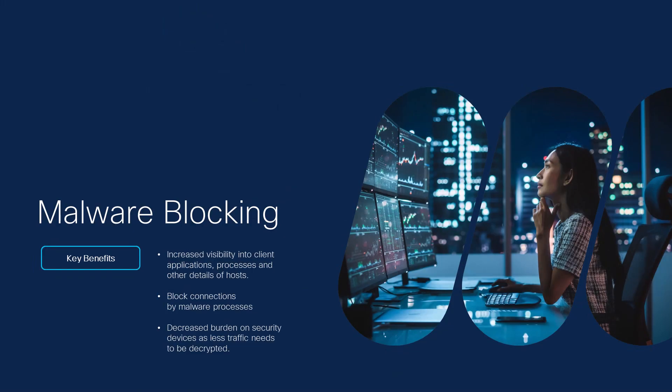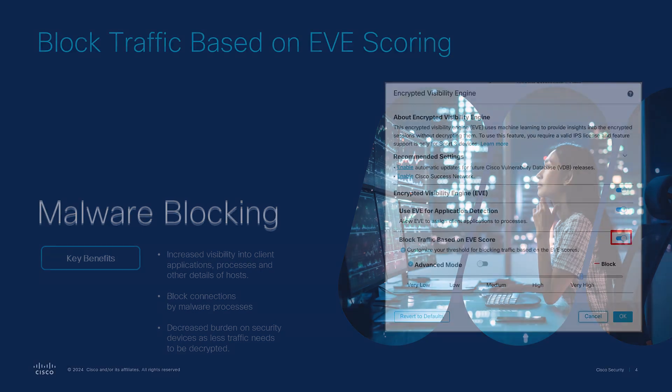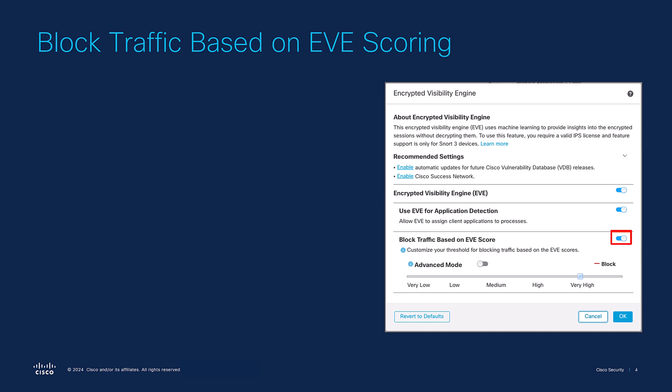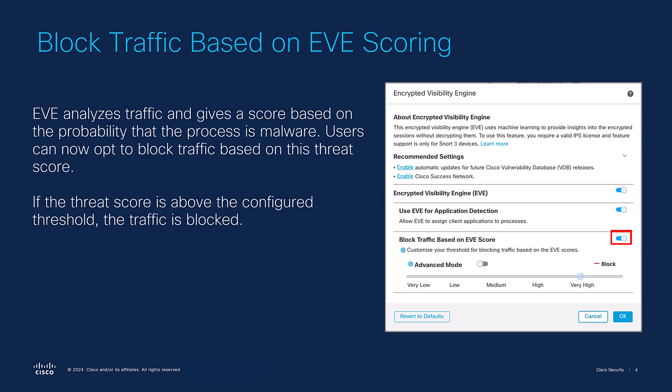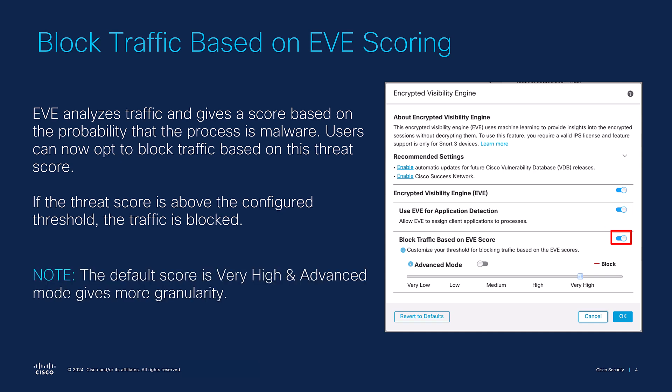Getting us started, we have malware blocking in TLS encrypted sessions, which has four main enhancements. The first is the ability to block traffic based on EVE scoring. In 7.3, threat scores from EVE created an indication of compromise or IOC flag for hosts based on a malicious client process, enabling users to identify hosts which may be infected. Now in 7.4, EVE can block malicious encrypted traffic based on the threat score. The default is set to very high and users can modify this in advanced mode.